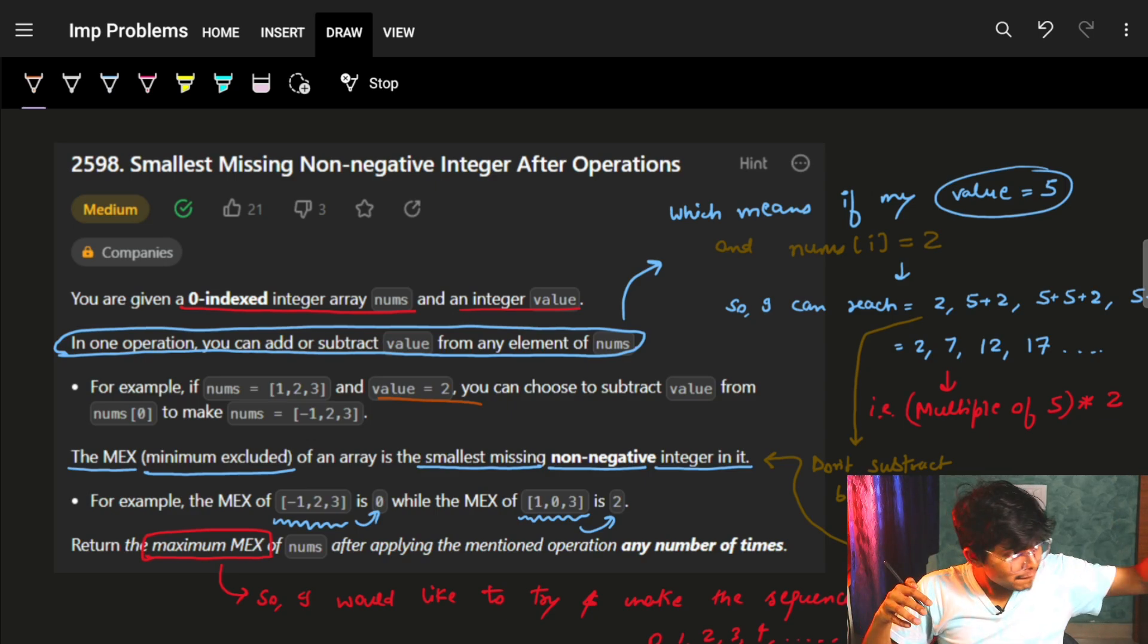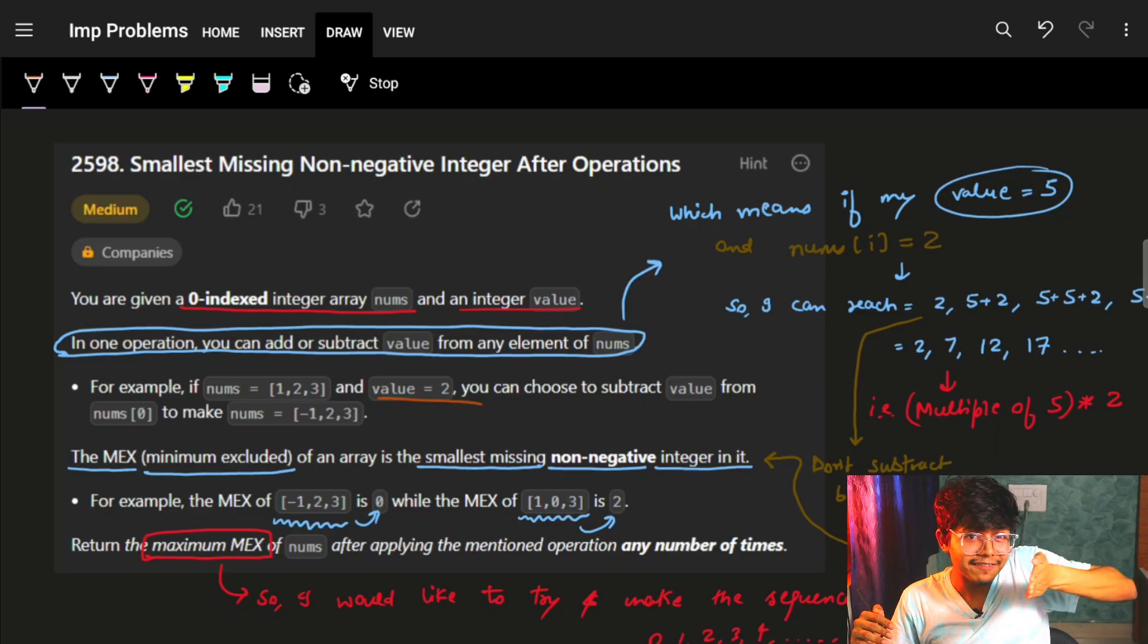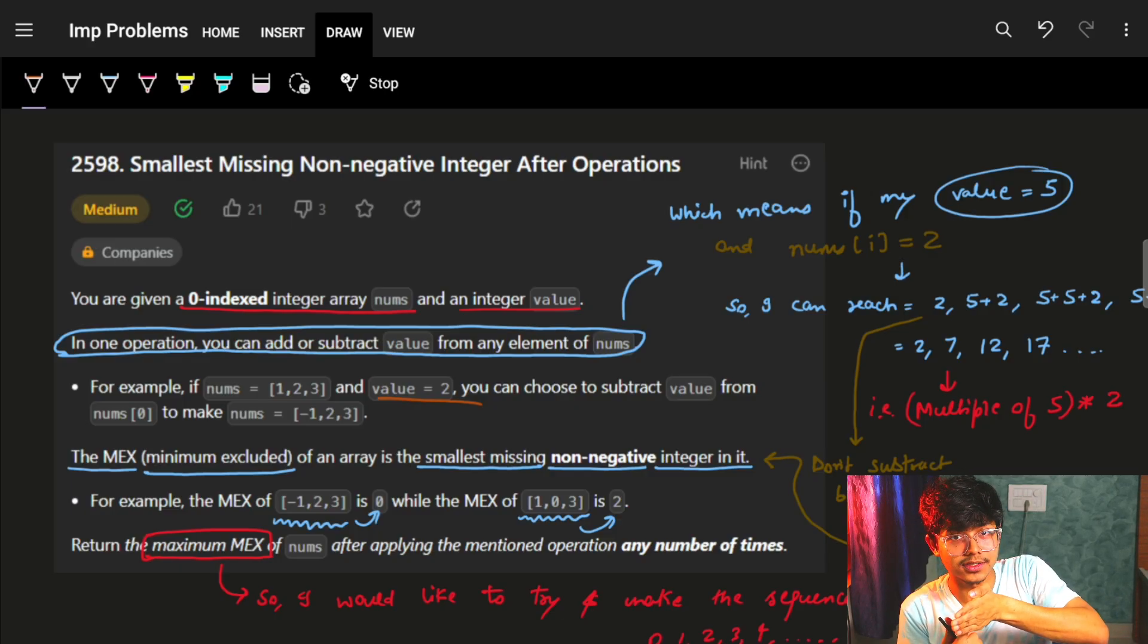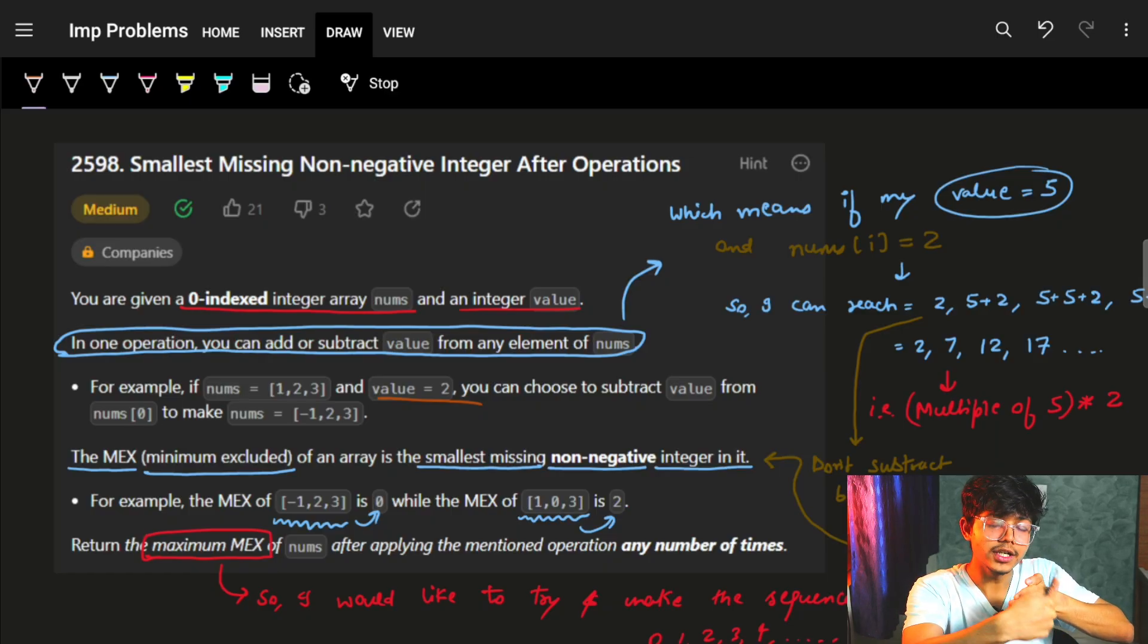If we go on from non-negative integers 0, 1, 2, 3, 4, the first missing element was 5. Because 0 was present, 1 was present, 2, 3, 4, the missing one was 5.